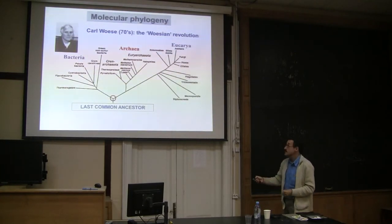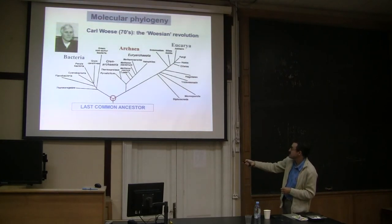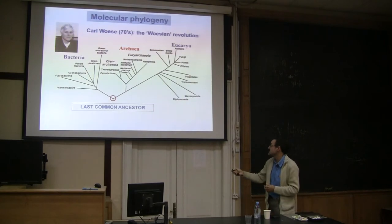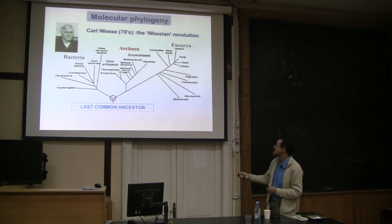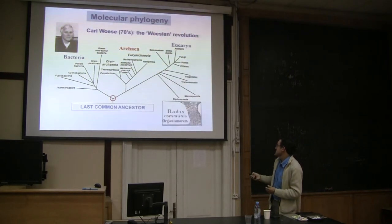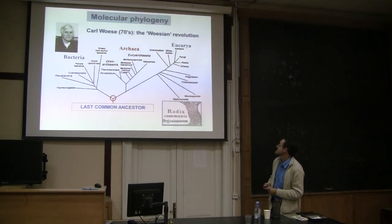As in Heckel's tree, in this tree by Woese there is a point at the base where all branches converge, which corresponds to the last common ancestor of all living species — the same as in Heckel's tree.